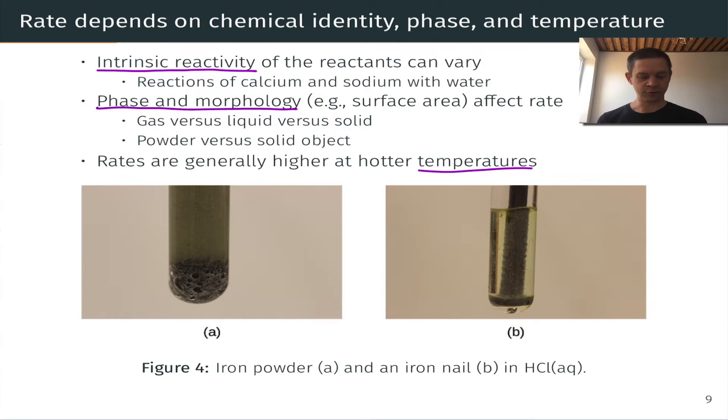The figure at the bottom of this slide shows you an example of the impact of morphology on reaction rate. On the left, we have iron powder in hydrochloric acid, aqueous hydrochloric acid, and on the right we have an iron nail in the same solution. You can see that the reaction appears much faster on the left than on the right where the solution is a lot cloudier, we see a lot more bubbles and that kind of thing. The origin of this is the difference in the surface area of iron exposed to the solution in powder versus on the nail surface.